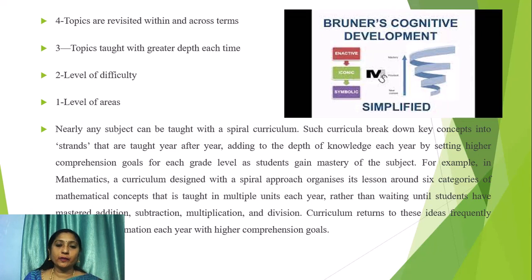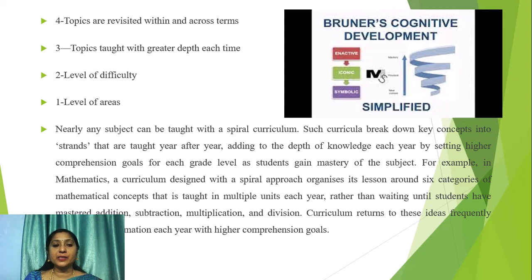Nearly any subject can be taught with a spiral curriculum. Such curricula break down key concepts into strands that are taught year after year, adding depth of knowledge each year by setting higher comprehension goals for each grade level as students gain mastery. For example, in mathematics, a curriculum designed with a spiral approach organizes lessons around six categories of mathematical concepts taught in multiple units each year, rather than waiting until students have mastered addition, subtraction, multiplication and division. The curriculum returns to these ideas frequently each year with higher comprehension goals.